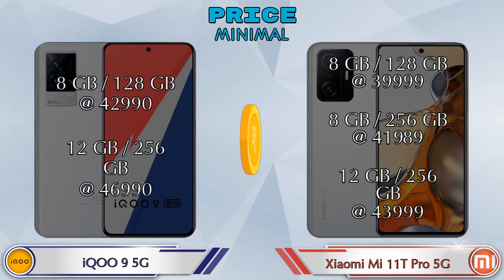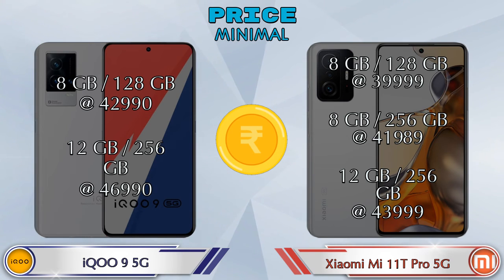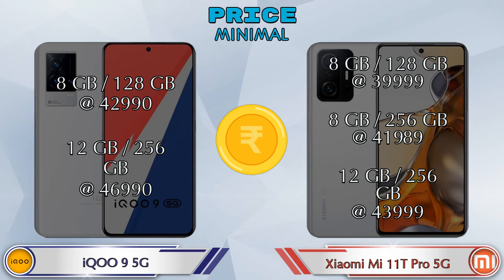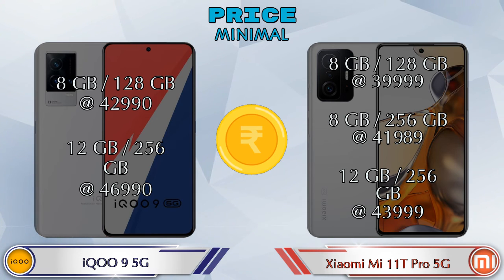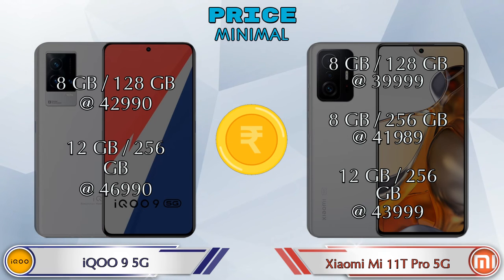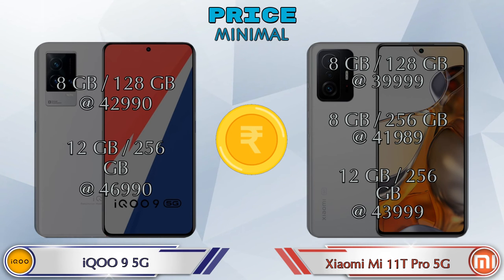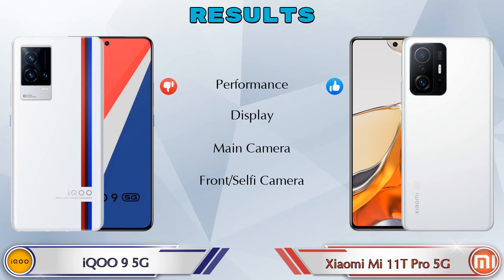Both phones have two variants. The iQOO 9 5G comes in 8GB RAM + 128GB storage and 12GB RAM + 256GB storage, both at 42,990 rupees. The Mi 11T Pro 5G comes in 8GB + 128GB at 39,999 rupees, 8GB + 256GB at 41,989 rupees, and 12GB + 256GB at 43,999 rupees.